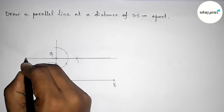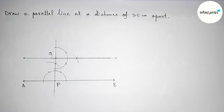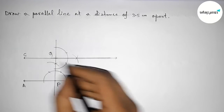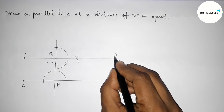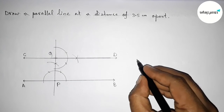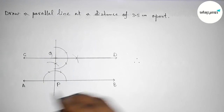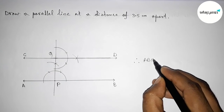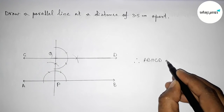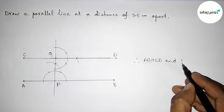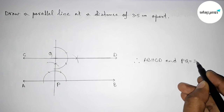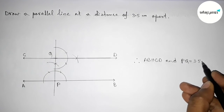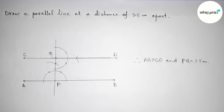Now joining this line segment and taking arrow marks on both sides, labeling C and D. From this picture we can say that AB and CD are parallel to each other — AB is parallel to CD — and the length PQ equals 3.5 centimeters. That's all, thanks for watching, please share it.